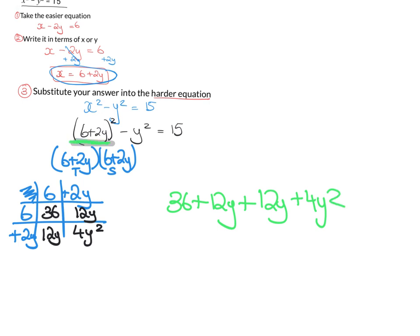Remember, that was me working out this part here. So I have to still add in the rest of the sum, which is minus y squared equals 15. So I'm going to do a little bit of tidying up. 12y and 12y is 24y. 4y squared minus 1y squared is 3y squared.